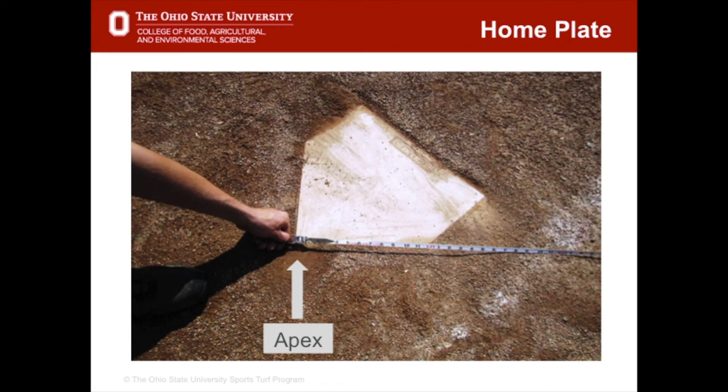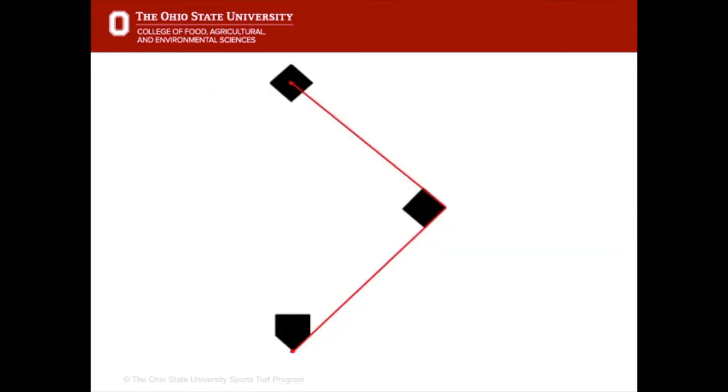When laying out and positioning bases on a field, it is important to always measure from the apex of home plate, shown here. First base is determined by measuring from the apex of home plate to the back right corner of first base. Second base is determined by measuring from the back right of first base to the centre of second base.